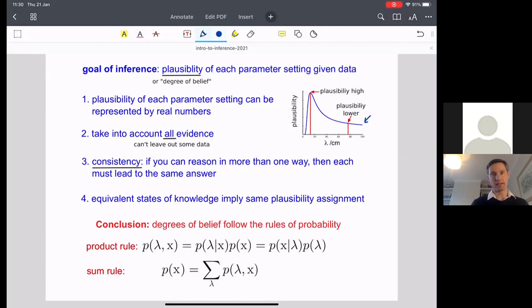Axiom number three is the important one. Again, I talked a little bit about this in the lecture. It's consistency. If you can reason in more than one way about the posterior distribution, so if you can compute the plausibility in more than one way, then each must lead to precisely the same answer.